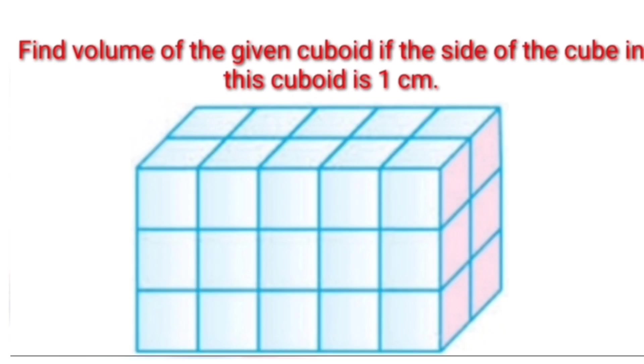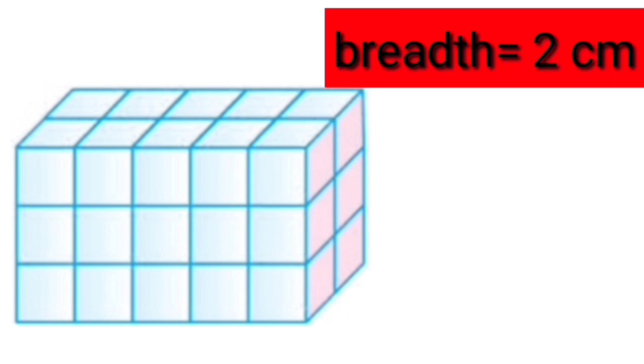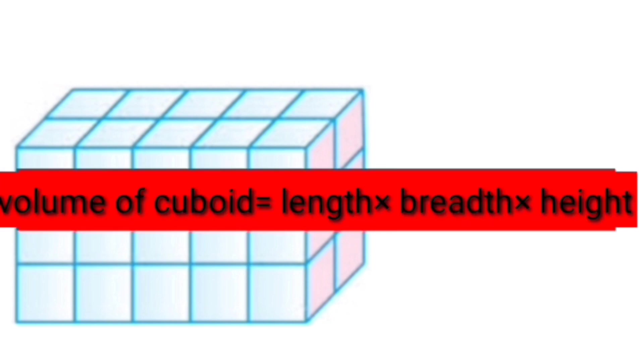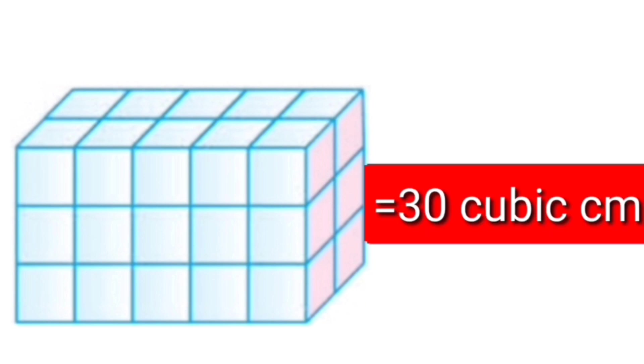Now on its basis, we will solve this question. Find the volume of the given cuboid, if the side of the cube in this cuboid is 1 cm. Counting: 1, 2, 3, 4 and 5 — the length is 5 cm. The breadth is 2 cm, and the height is 3 cm. Volume of a cuboid is length into breadth into height, so we multiply 5 cm, 2 cm and 3 cm. The answer is 30 cubic cm.